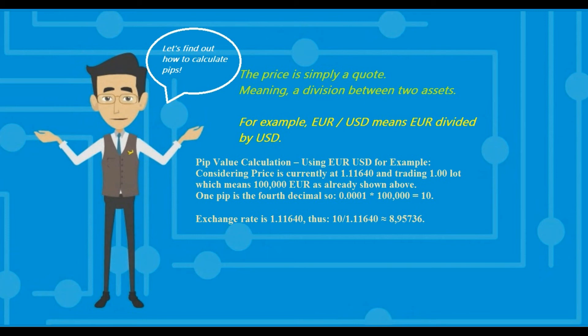So how do we calculate pip values? Using EURUSD, for example, consider the price at 1.11640 and we are trading one lot — controlling 100,000 euros. We want to know how much one pip is worth, so that's the fourth decimal: 0.0001 times 100,000 euros equals $10. Then we divide 10 by the exchange rate of 1.11640, which gives us almost 9 euros — pretty much $10. So that's the pip value right there.